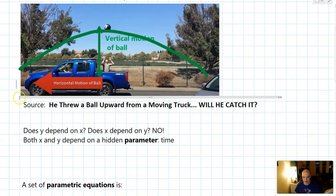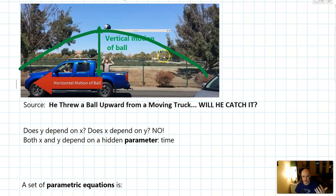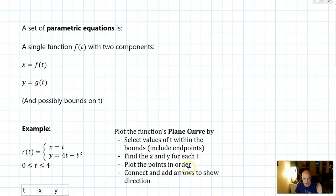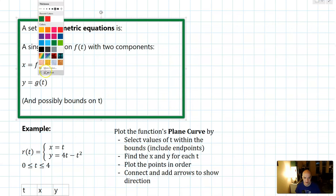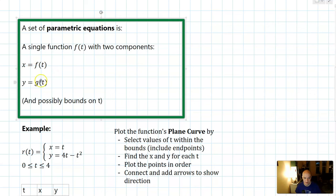And the key observation in this video and in many other situations is that when we're trying to analyze the motion of the ball, does y depend on x? Not really. Does x depend on y? Not really. Both x and y of the motion here, the vertical and horizontal motion, depend on a hidden parameter and that parameter is time. We usually use the variable t for that parameter. So generally, a set of parametric functions is a single function with two components: an equation for x in terms of t, an equation for y in terms of t, and then potentially some bounds on t to tell us where t starts and ends.